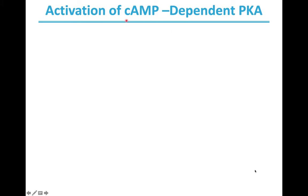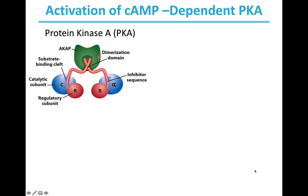Let us examine how cAMP activates PKA, or protein kinase A. The structure of protein kinase A has various domains. The first domain, shown in green, is called AKAP, or A-kinase anchoring protein domain. It has two blue-colored catalytic subunit domains and a red-colored regulatory subunit domain. The regulatory subunit domain dimerizes at the AKAP domain.